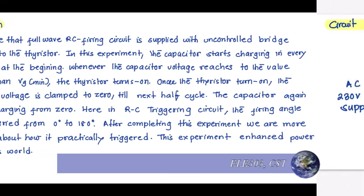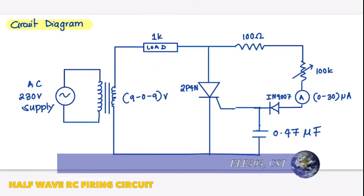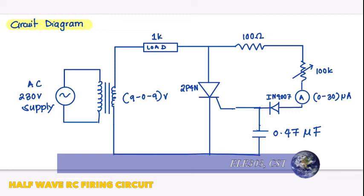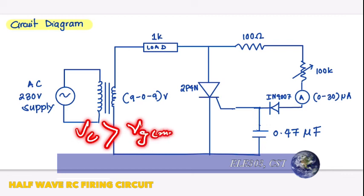Now let's talk about the half wave RC firing circuit. In the half wave RC firing circuit, the firing angle can be controlled from zero to 180 degrees. The capacitor charges during the negative half cycle. The diode here blocks negative voltage appearing across the gate terminal. The SCR triggers when the capacitor voltage is greater than Vg minimum during the positive half cycle.